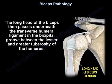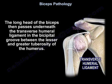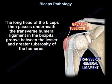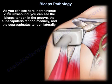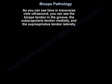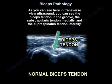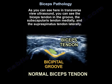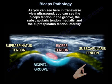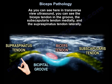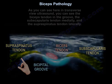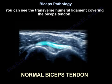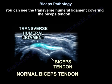It passes underneath the transverse humeral ligament in a groove between the lesser and the greater tuberosity of the humerus. As you can see here in transverse view ultrasound, you can see the biceps tendon in the groove, the subscapularis tendon medially, and the supraspinatus tendon laterally, with the transverse humeral ligament covering the biceps tendon.